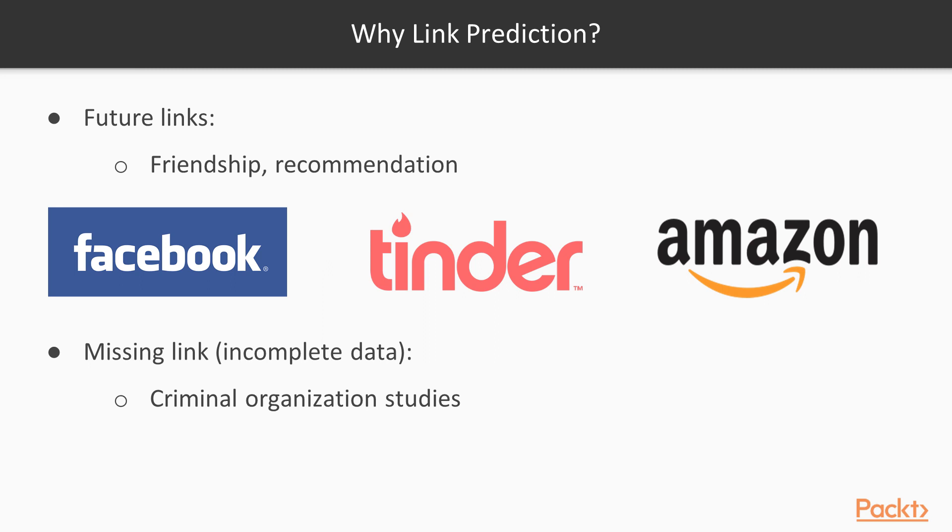The second use case for link prediction is for filling incomplete data. For instance, in the case of criminal organizations for which, by definition, we have only a subpart of information.